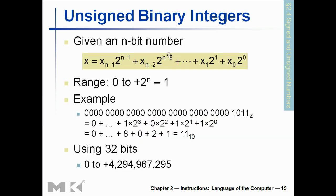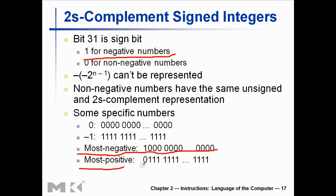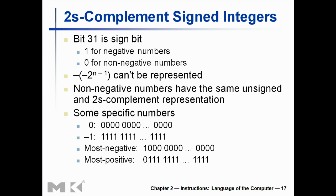Unsigned binary integers — you already know that. The range is 0 to 2^n minus 1. For signed numbers: if the number starts with 1, they are negative; if signed and starts with 0, they are non-negative. So the most positive number is 0 followed by all 1s, and the most negative number is 1 followed by all 0s. Not so critical but worth mentioning.